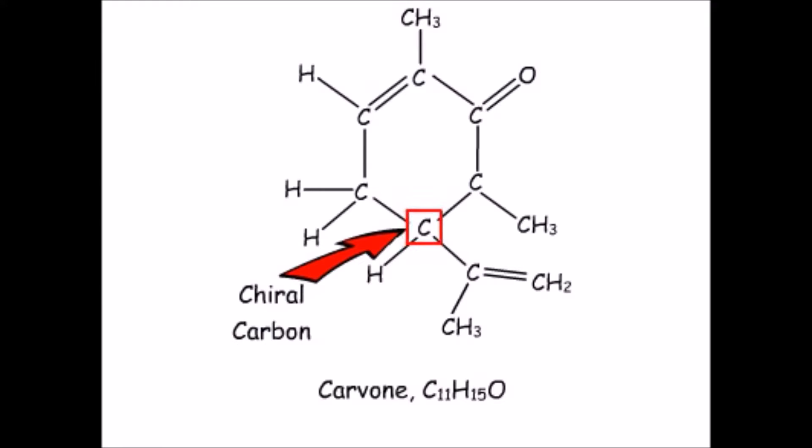Carvone has one chiral carbon, that is, one carbon with four different groups. This means we can have optical isomers of carvone.